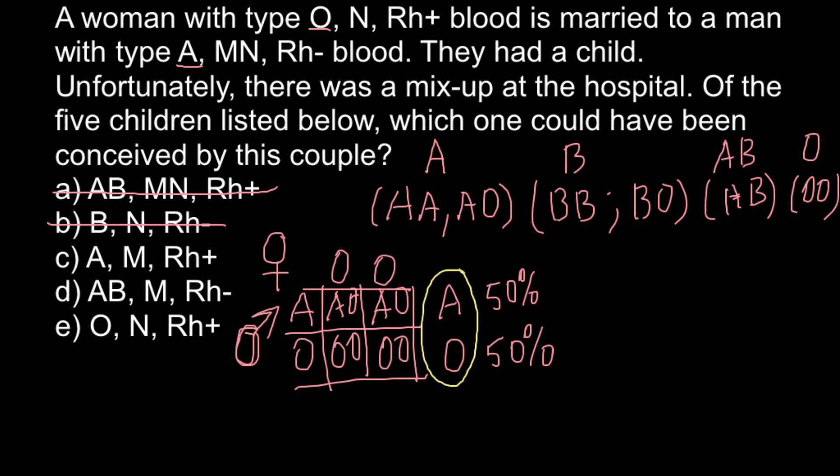Answer C has blood group A — this could be our answer. Answer D has blood group AB, which is not possible. And answer E gives blood group O, which is also possible. So now we have to move to the MN blood group system in order to find the correct answer.